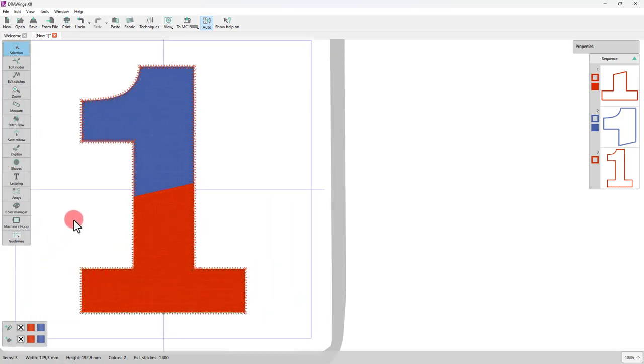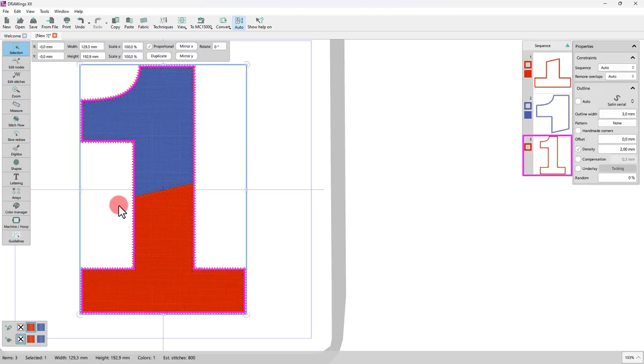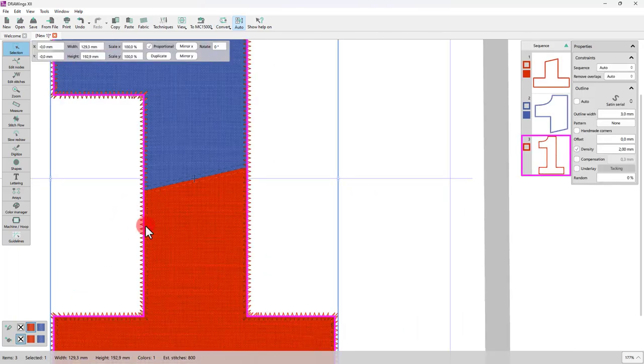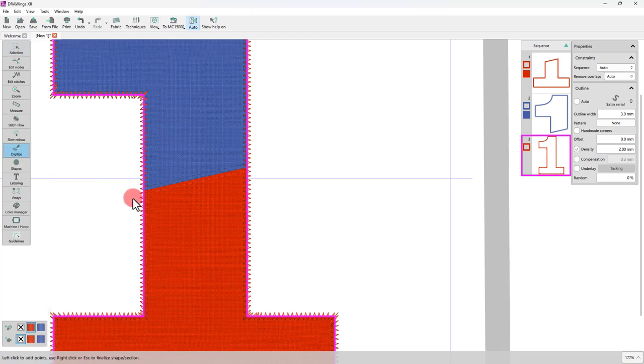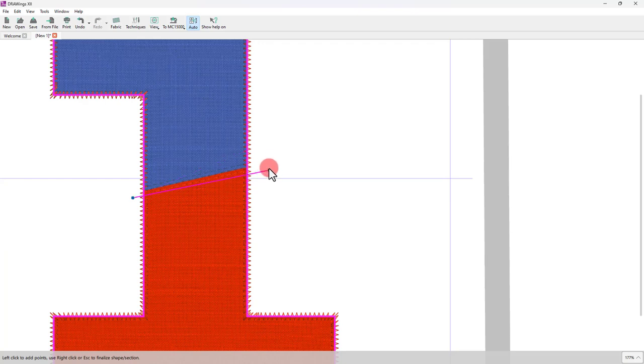The Satin Serial Auto Border will cover any holding stitches around the design, but you also want to cover the stitches in between the applique parts. To do so, we will use the Outline Shape tool once more and draw a line on the area where the two applique parts meet.